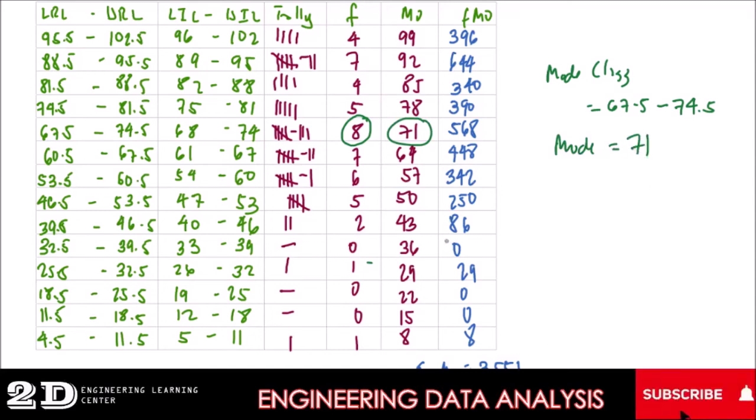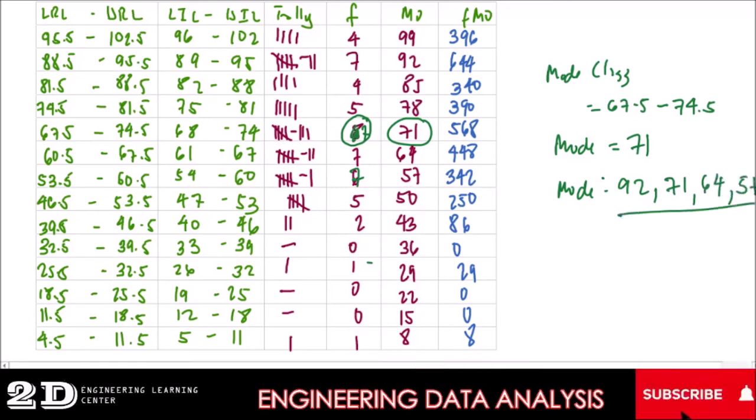For example, during the getting the frequency distribution table, if this one becomes 7, so we have now 1, 2, 3, 4 classes that has 7 frequencies. So we will get each of their midpoint. So this one is 7, so our mode is 92. Then this one is 7, so 71, then 64, then 57. So we have 4 modes in a given group of data.